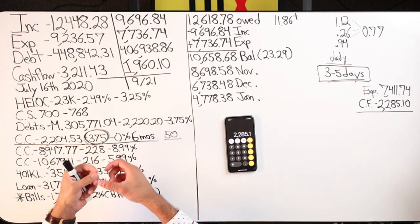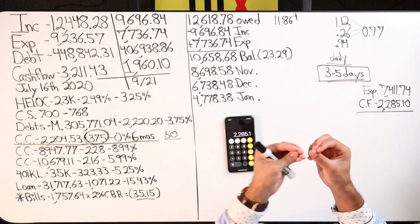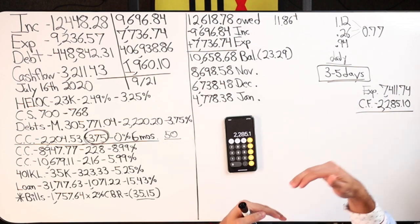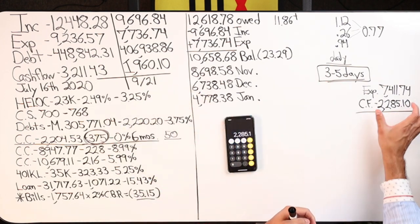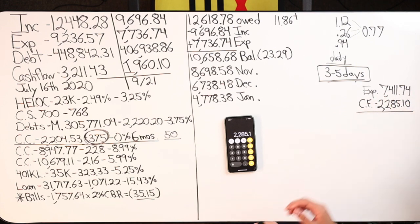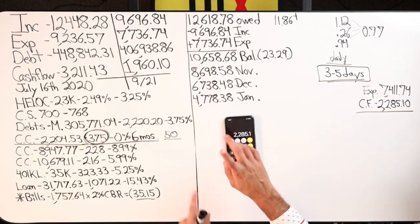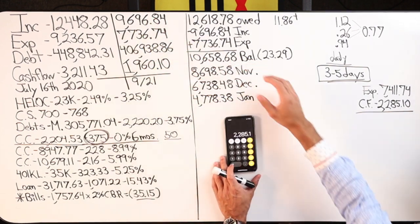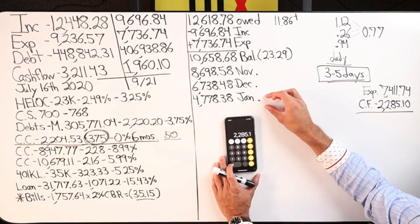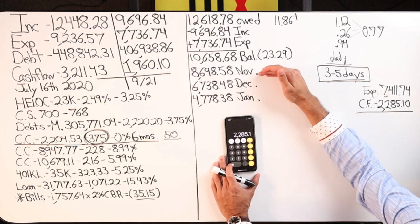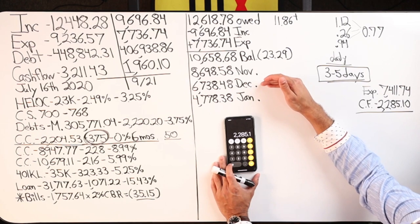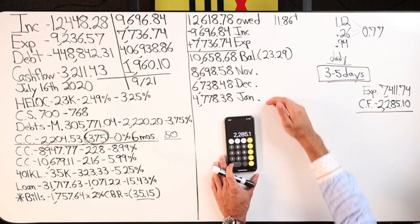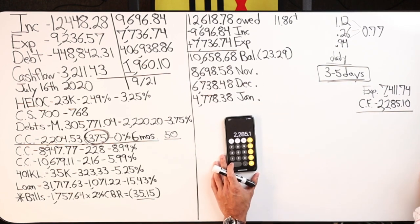$325 of principal on a debt that is charging me interest. What happens, ladies and gentlemen? I go faster. The dollars work harder for me. So now I only have $7,411.74 coming out. $2,285 stays in the HELOC. Again, I'm leaving room for error. So I went off of these numbers till about January of 2021. Income goes in, expenses come out. Balance is at $8,698.58. December, income goes in, expenses come out, balance $6,738.48. January, balance is at roughly $4,778.38.